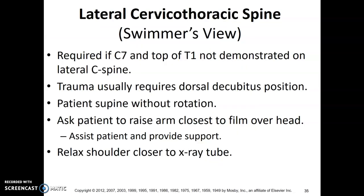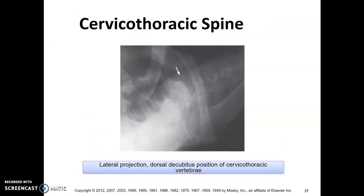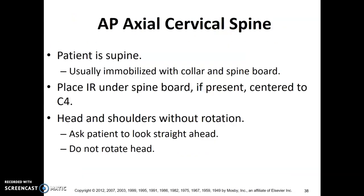Swimmer's view — you know how to do a swimmer. You can do a cross-table swimmer the same way. C7-T1, arm closest to the image receptor is moved.